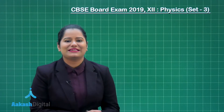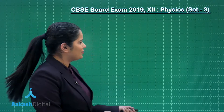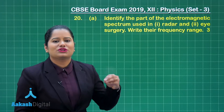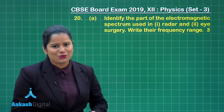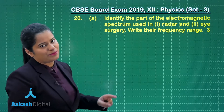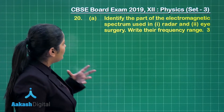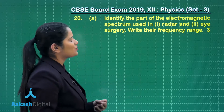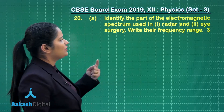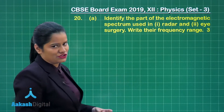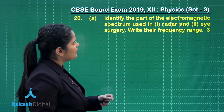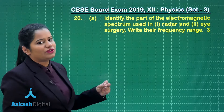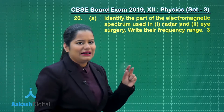Now let's try to answer question number 20. This question holds three marks and has two parts. The first part on the board wants us to identify the part of the electromagnetic spectrum used in radar and eye surgery, and we also need to mention their frequency range. This part holds one mark.